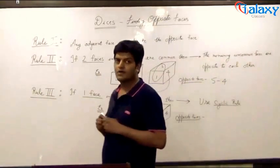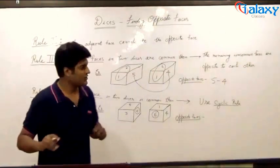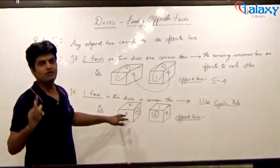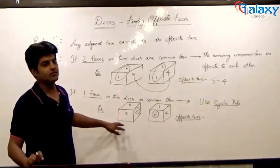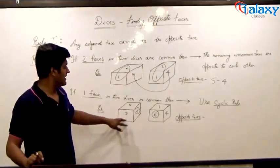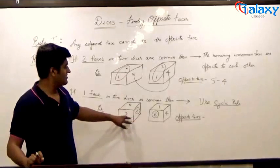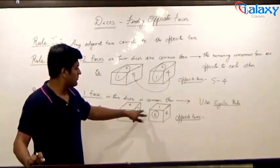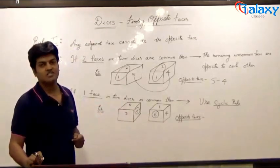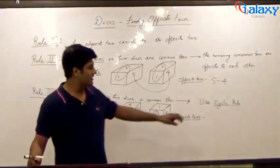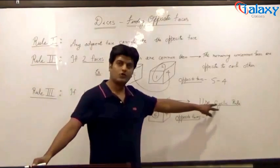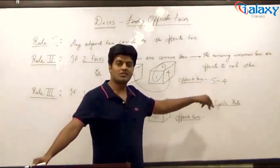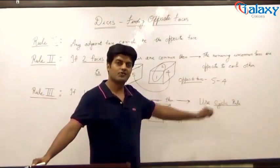If the two positions of a dice are given in such a manner that there is only one face that is common — say, in this example, six is common in both the dices — in such case, we use the cyclic rule through which we can find all the three pairs of opposite faces.